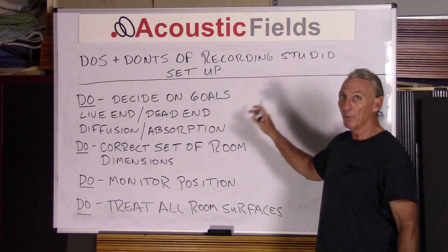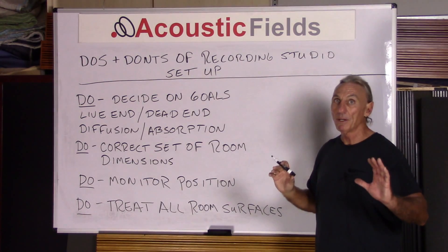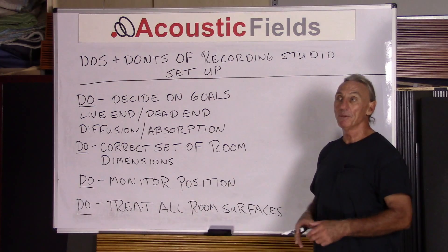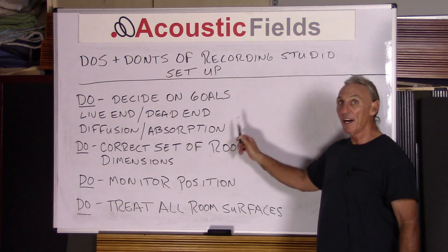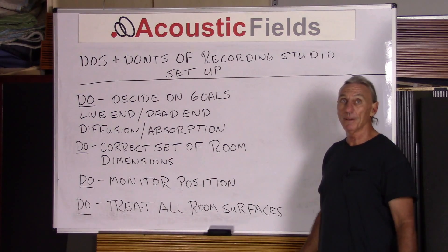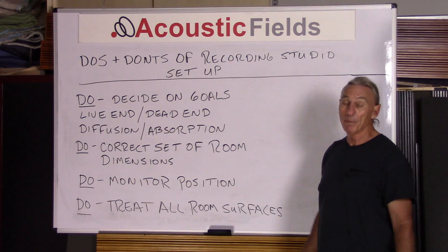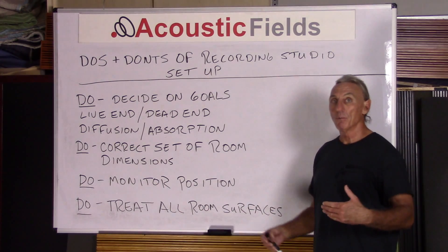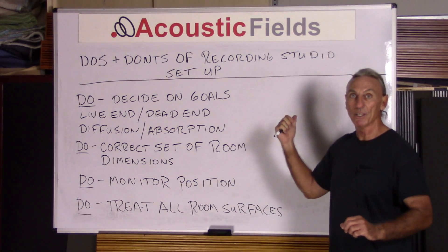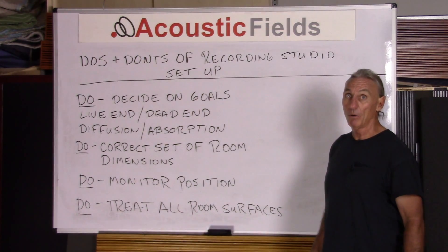To summarize the do's: decide on your goals for the room. If you're doing classical recordings and want that analytical, complete separation of all sounds, you probably want a dead front end and a live rear end. Decide on the correct set of room dimensions — if you don't, you'll constantly be working uphill, unable to get rid of that 40-cycle problem. A little planning upfront: make sure your monitors are positioned correctly and treat all room acoustic surfaces.